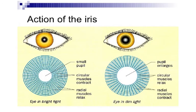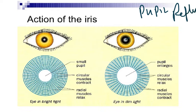Now the first reflex we study is the pupil reflex. The pupil size changes in response to light. The pupil becomes either smaller or larger in diameter, controlled by the muscles in the iris. The iris contains two types of muscles.